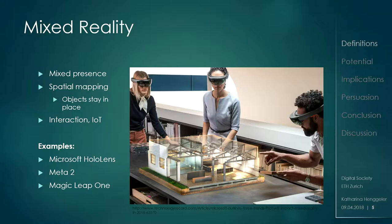And then there is mixed reality. It's a term that's not really specific because there are lots of different definitions, but the one I'll go with is that you have a mixed presence: you're in the real world, you see the real world, but you get objects inside of it. They're anchored, so you can walk around them and they don't shift — they stay in place. If you come back into the space they're still there. The Microsoft HoloLens is the very prominent example right now; Meta 2 by Meta is also another example. Magic Leap is there for reference but hasn't been released yet.